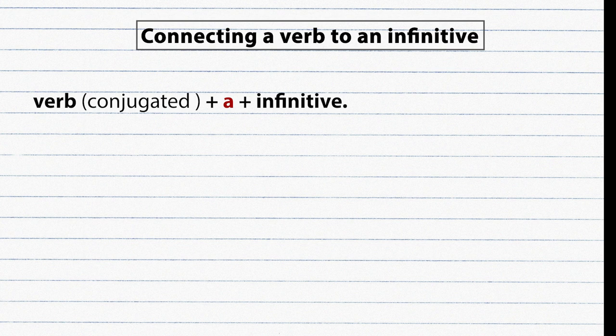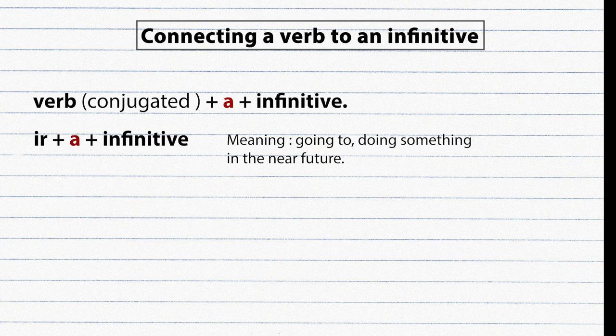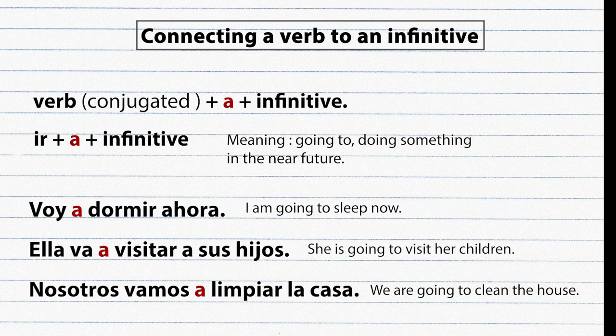Another common use of the letter A is to connect a conjugated verb to an infinitive. One of the most common verbs in this form is ir a + infinitive. Examples: Voy a dormir ahora. Ella va a visitar a sus hijos. Nosotros vamos a limpiar la casa.